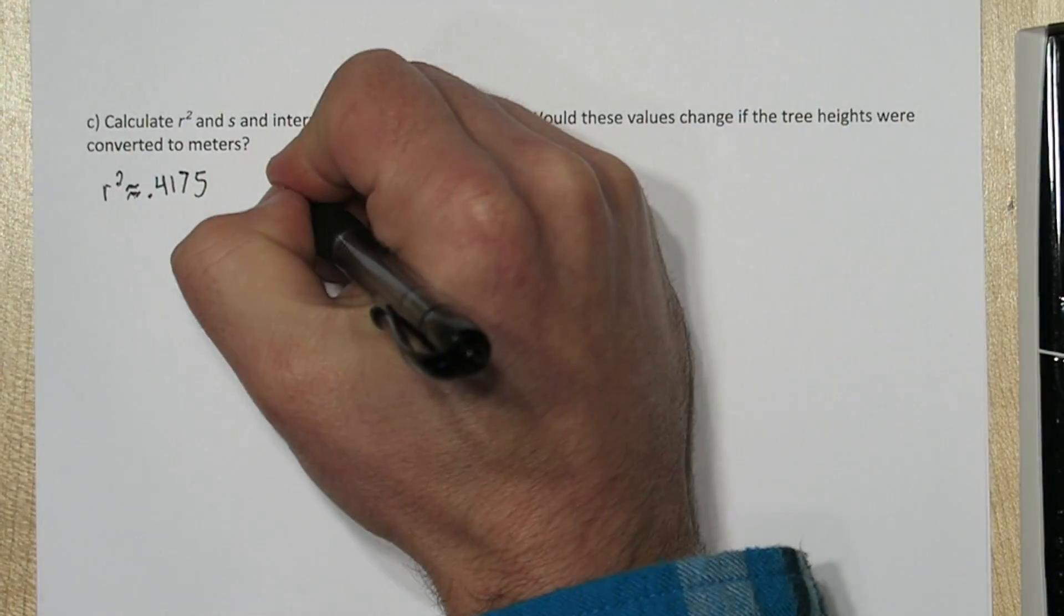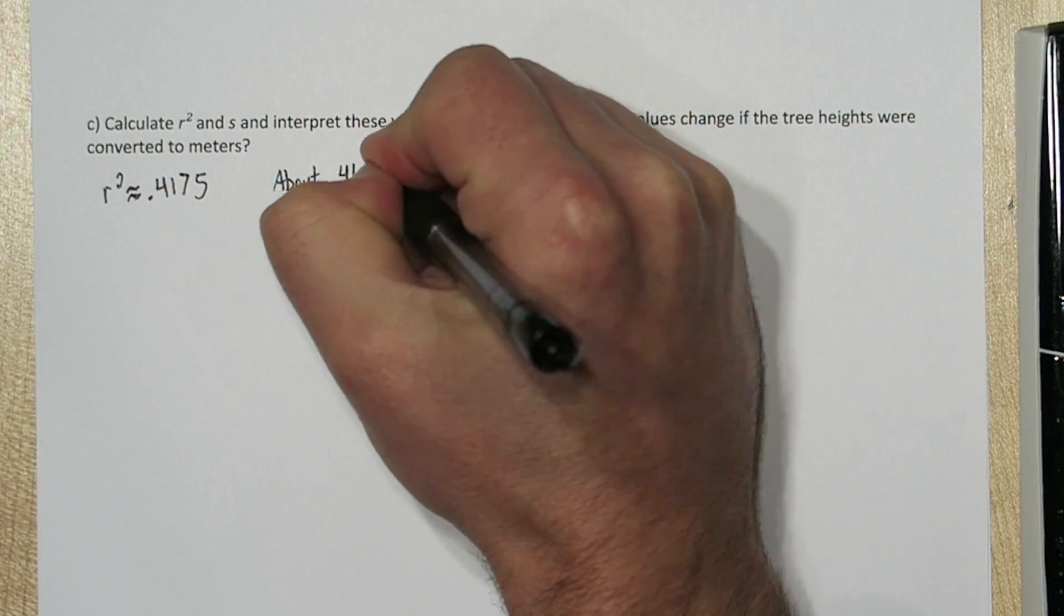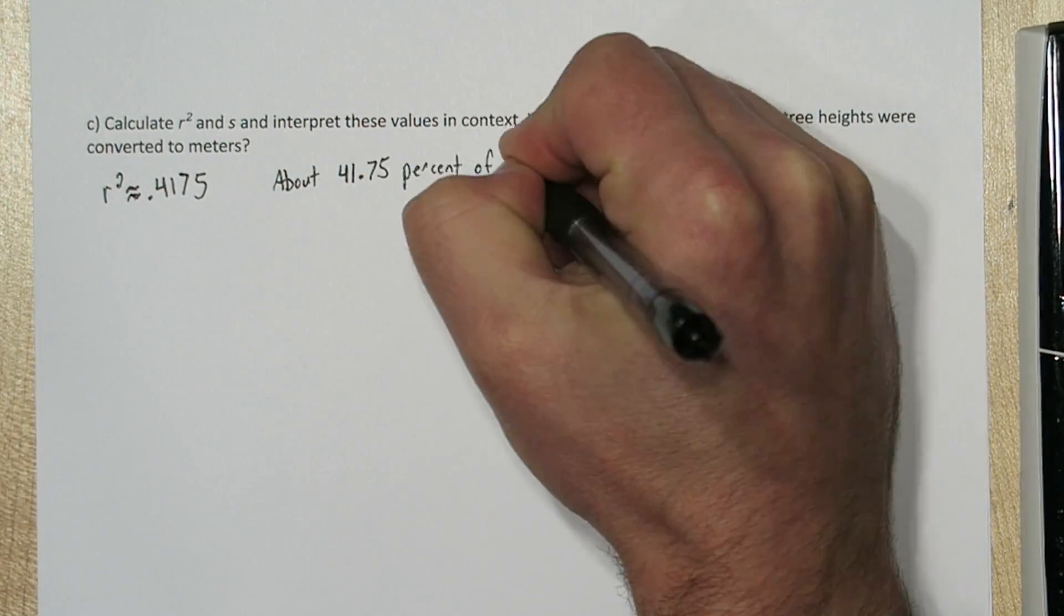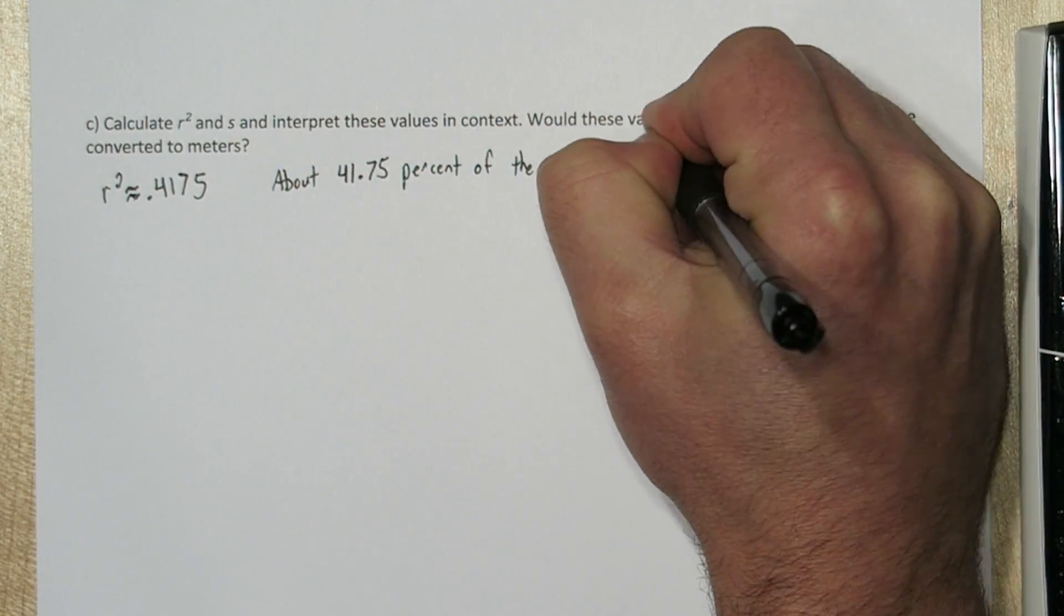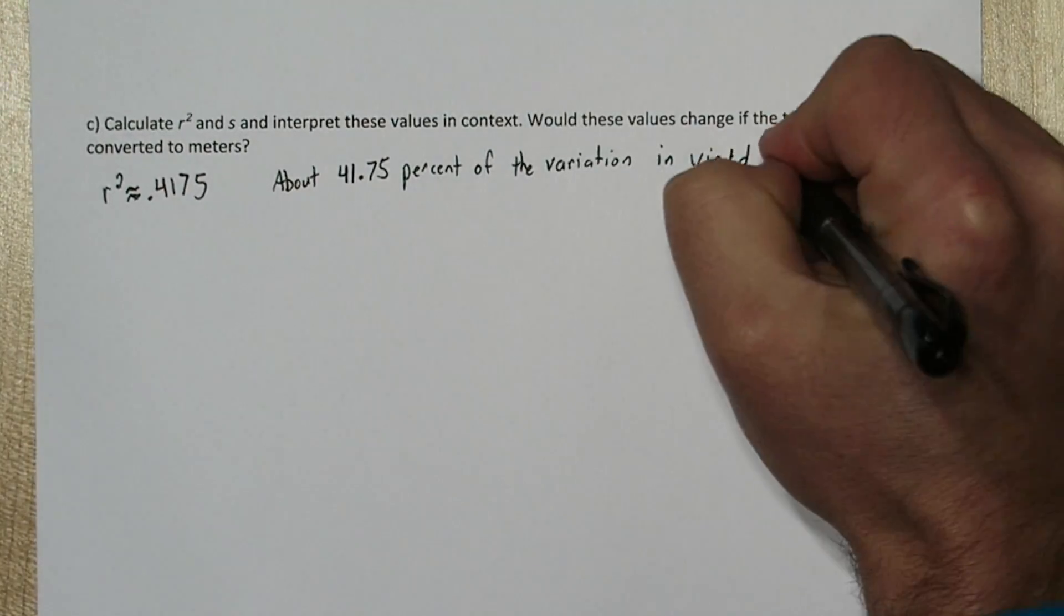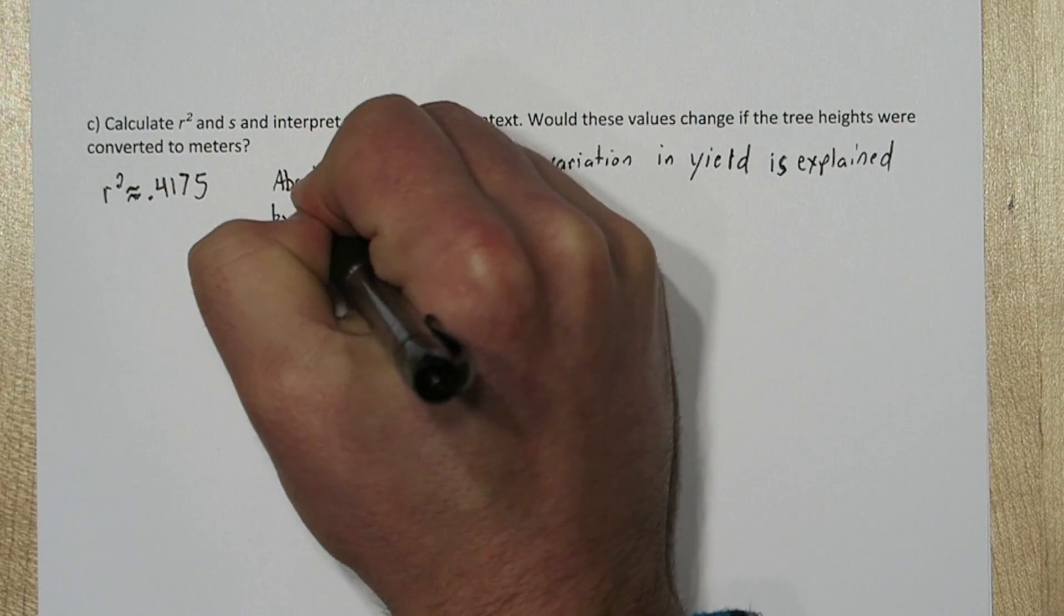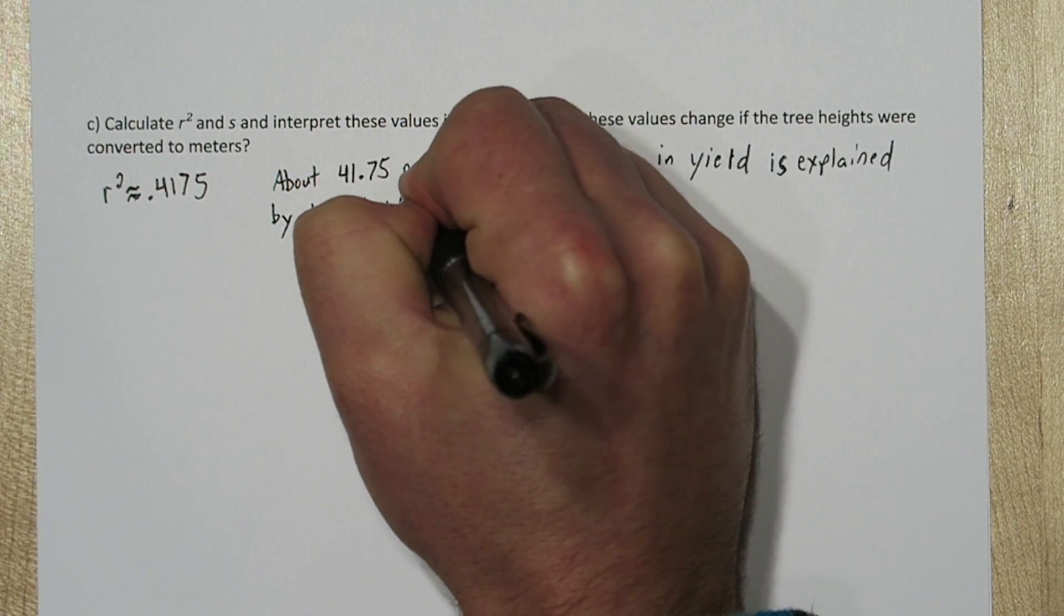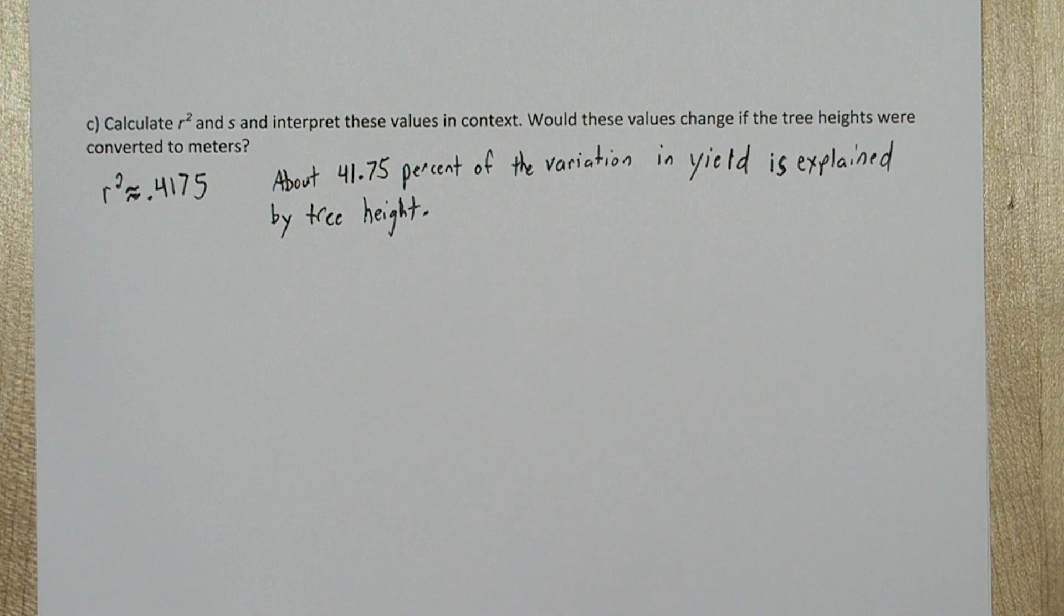And R-squared has a really neat interpretation. As you look at the original scatter plot, you can see that the yield varied quite a bit. There's a lot of variation in yield. Well, how much of that variation, what percent of that variation, can be explained by the tree height? That's what R-squared measures. So we'll say about 41.75% of the variation in yield can be explained by tree height.